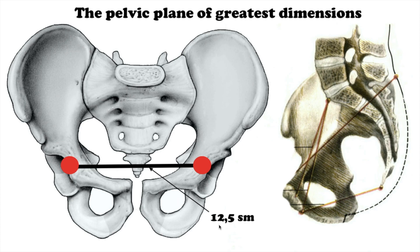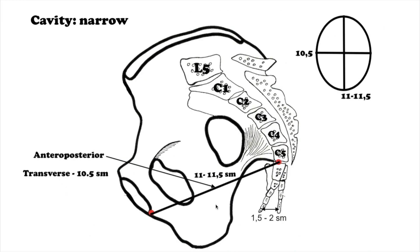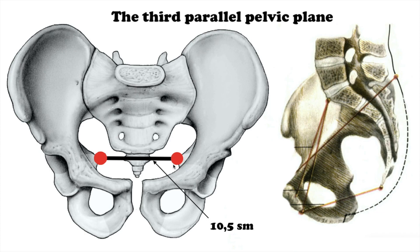The oblique dimension of the pelvic plane of greatest dimensions is considered conditionally 13 cm. The third parallel pelvic plane is limited from the front by the inferior margin of the symphysis, from behind by the sacrococcygeal joint, and from the sides by the axes of the ischial bones. Two dimensions are differentiated: straight and transversal. The straight dimension, from the sacrococcygeal joint to the middle of the inferior margin of the pubic symphysis, equals 11 cm. The transversal dimension, between the internal surfaces of the ischial bone axes, equals 10.5 cm.